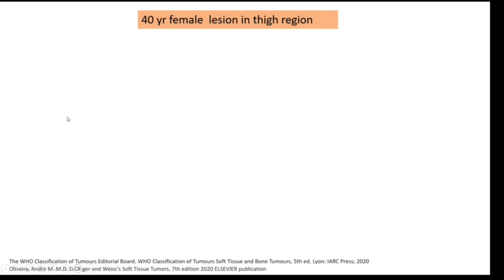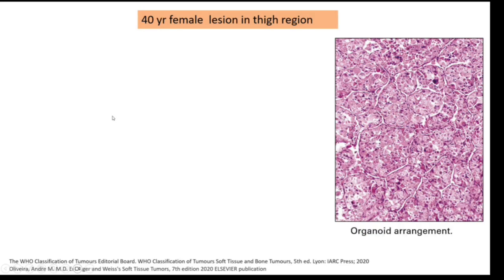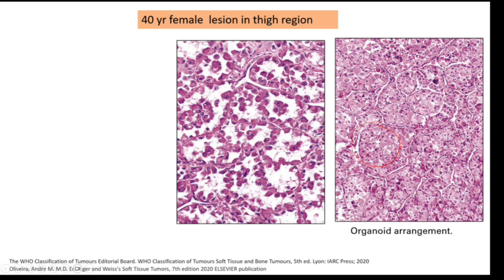A 40-year-old female presented with a lesion in the thigh. The first pattern of arrangement seen here is called the organoid pattern. What is this next pattern of arrangement?